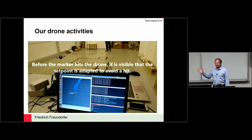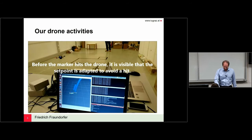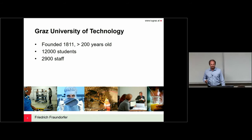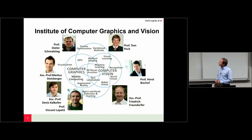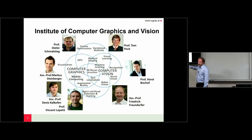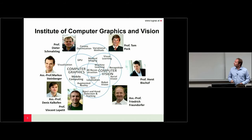Before going into technical details, I would like to tell you a little about my place. I'm from the Graz University of Technology — a university in the second largest city in Austria, around 200 years old, with about 12,000 students and 2,900 staff. I'm based at an institute that is home to seven professors: Professor Schmalstieg, Professor Tom Pock, Professor Bischof, me, Professor Lepetit, Professor Kalkoven, and Professor Steinberger. Half of us work in computer vision, the other half in computer graphics. I'm the only one working with robots — mainly with drones; we don't have ground robots.